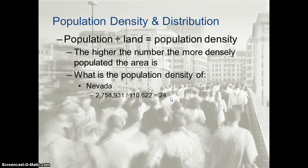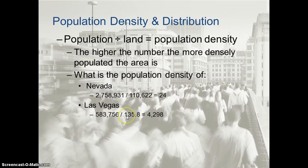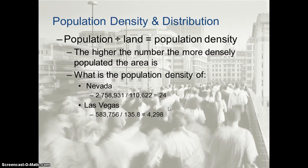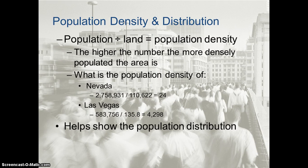If we look a little bit closer at the distribution, that distribution isn't the same — there aren't 24 people per square mile in all of Nevada. Specifically, Las Vegas: we take its entire population of 583,000 people, divide it by its land area of 135 square miles, and we get 4,298 people per square mile as the population density in Las Vegas. These two numbers aren't the same because we're measuring two very specific land sizes — 110 thousand square miles for Nevada versus just 135 square miles for Las Vegas.